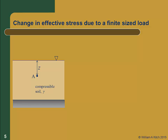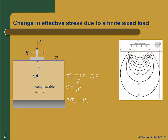Our initial conditions are as with the previous example. We're considering a point A at a depth of z below the ground surface. The initial vertical effective stress will again be gamma times z minus gamma water times z. But now, instead of a wide fill, we'll place a square footing of width B on the ground surface above point A. The footing will apply a stress Q to the ground surface, and Q will be equal to P divided by B squared. The change in vertical stress at A will now be equal to the applied stress Q times I sub sigma. We'll have to use the stress distribution techniques we learned in Chapter 9 to determine I sub sigma, using either the chart solution or one of the equation solutions given in Chapter 9. The final effective stress at A will be gamma times z minus gamma water times z plus Q times I sub sigma.